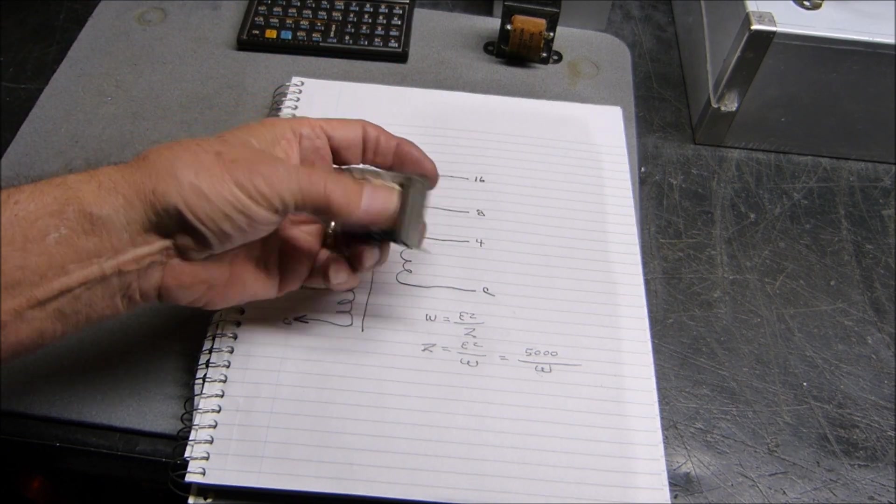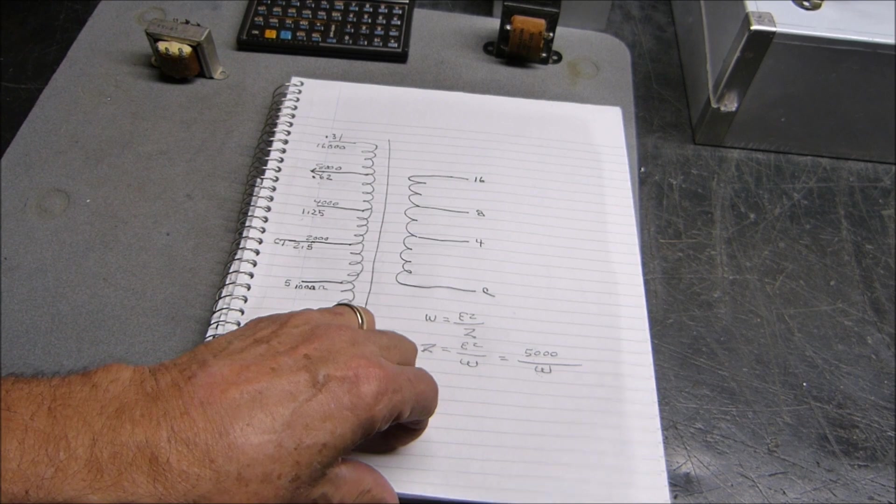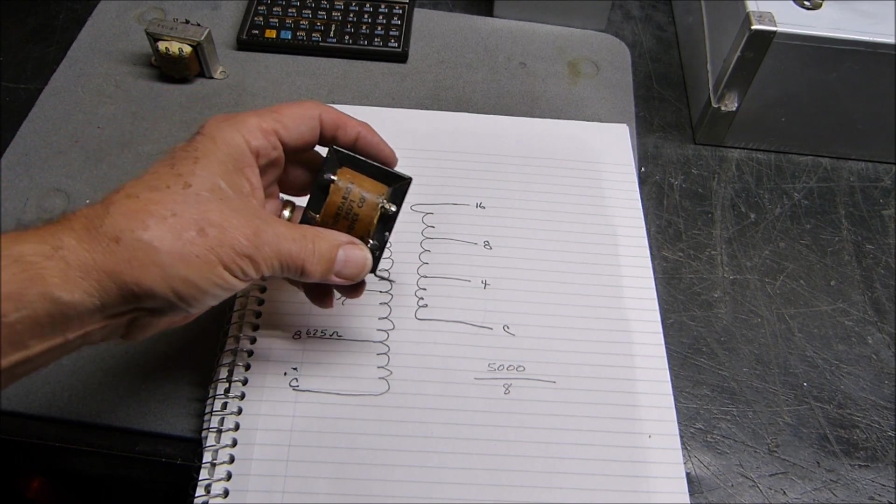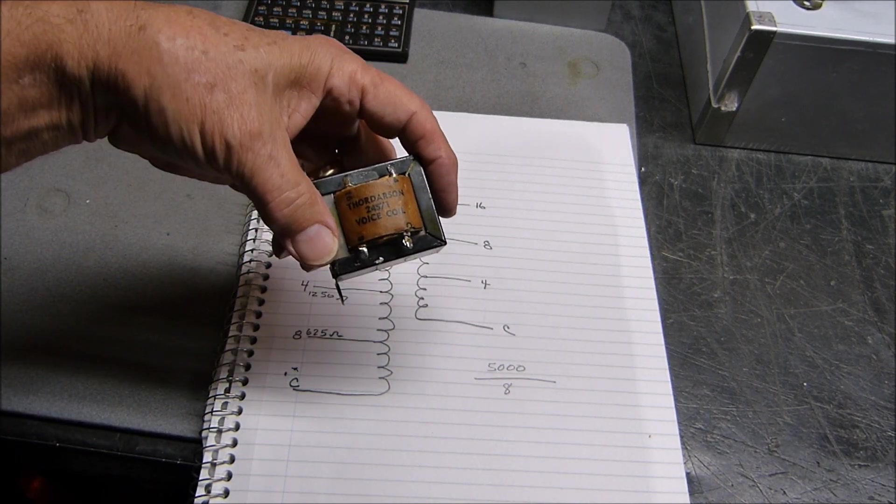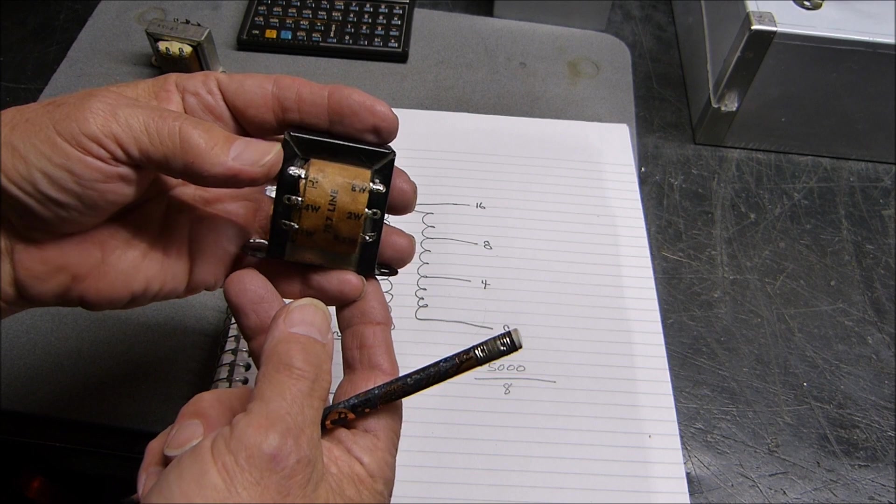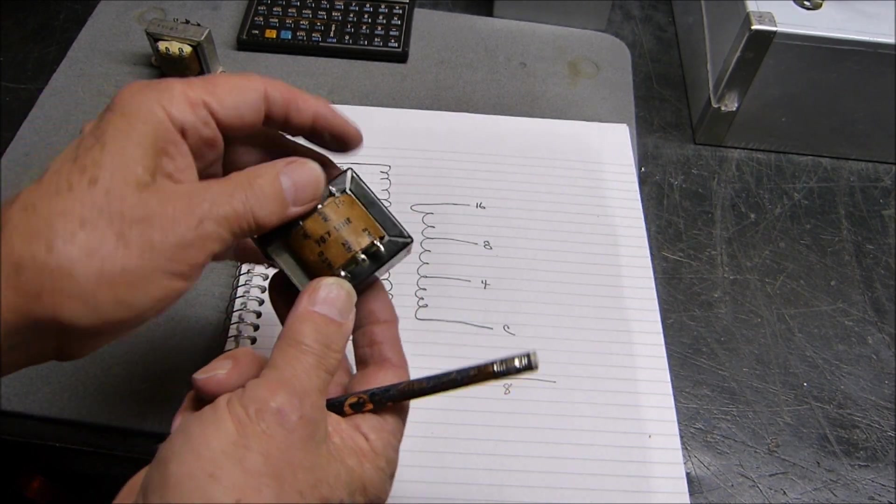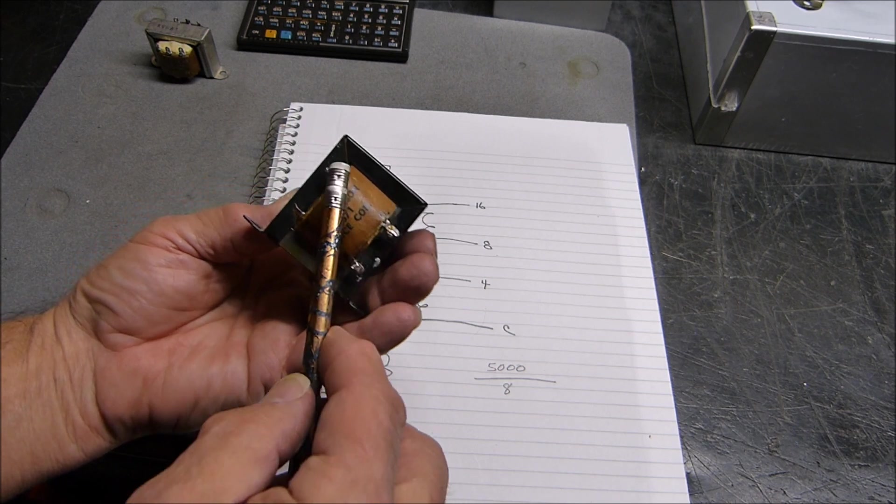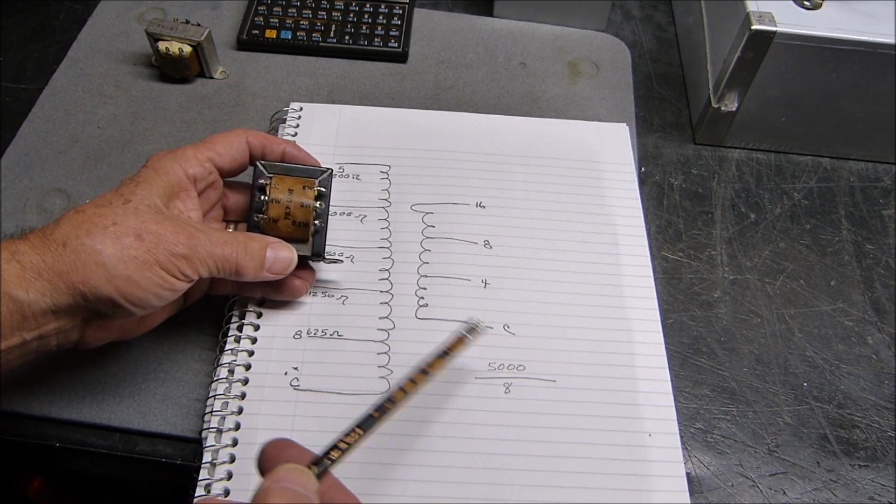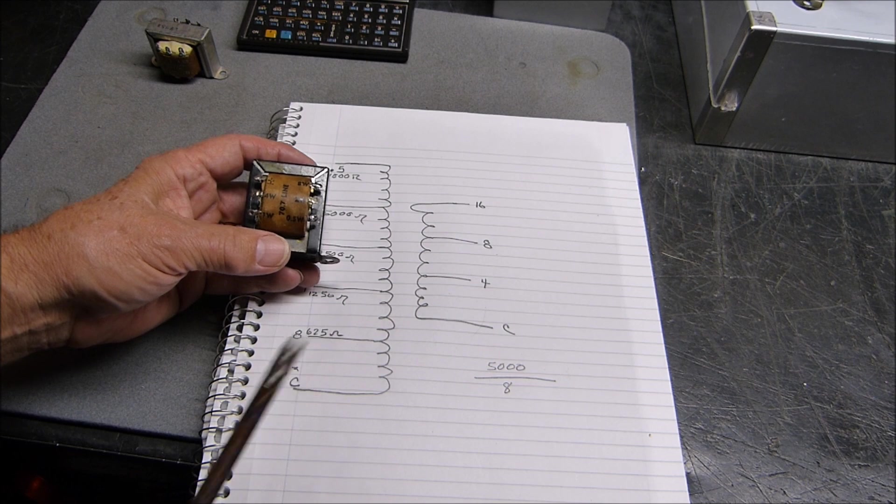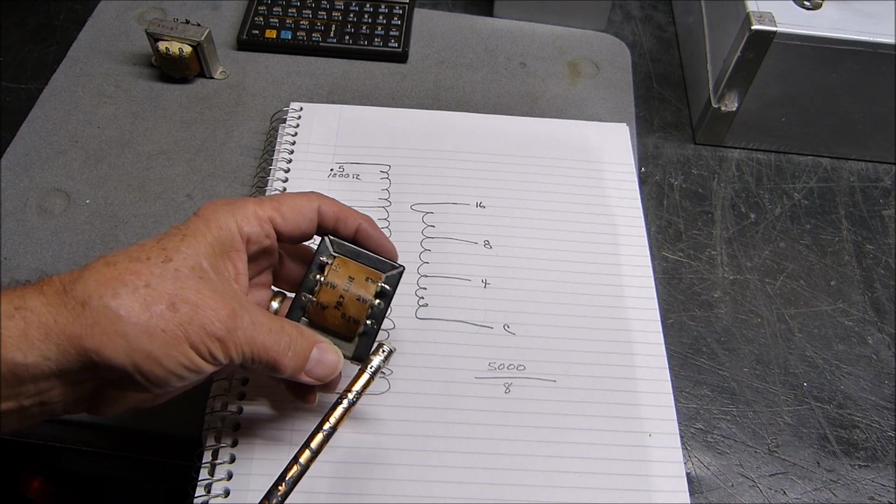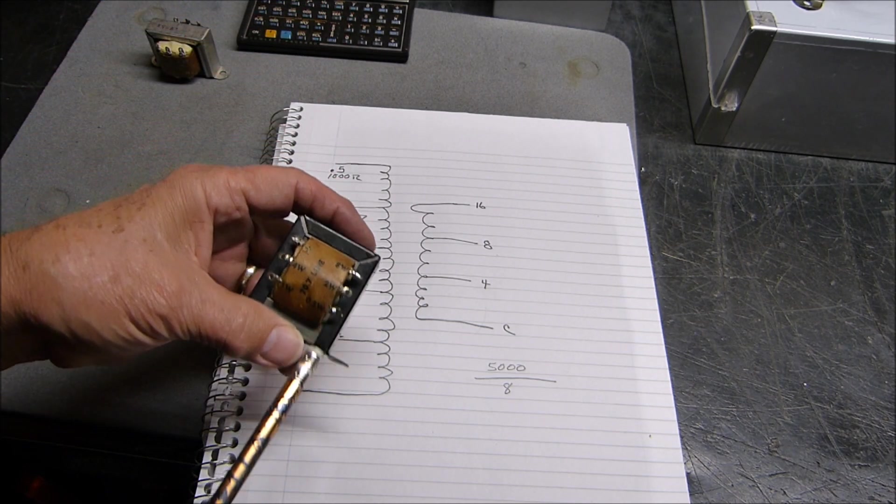Let's look at another transformer. Same thing works every time. It's too simple. This one does have four, eight, and 16 as you can see for the voice coil, and it tells you the same thing: 70.7 volt line. 70.7 volts from common to right here will deliver a half a watt to either 4, 8, or 16 ohms. So we do it again. It's always 5,000 because it's E squared.